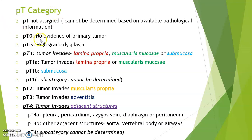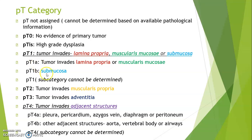PT0 is when there is no evidence of primary tumor. PTIS is when high-grade dysplasia or carcinoma in situ is seen. PT1 is when the tumor invades the lamina propria, muscularis mucosae, or submucosa — so tumor extension up to submucosa is PT1. It is further divided into T1A, when the tumor invades lamina propria and muscularis mucosa, and T1B, when the tumor invades submucosa.